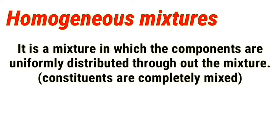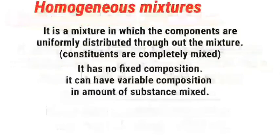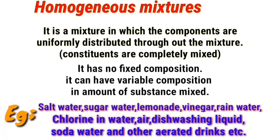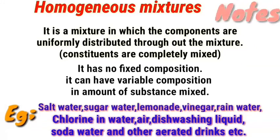What is a homogeneous mixture? It is a mixture in which the components are uniformly distributed — 'uniformly distributed' is a key word for your exam. It has no fixed composition; it can have variable composition in the amount of substance mixed. Examples include: salt water, sugar water, rainwater, and vinegar.